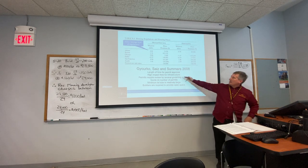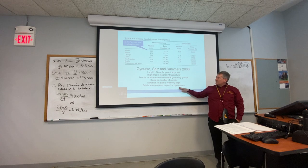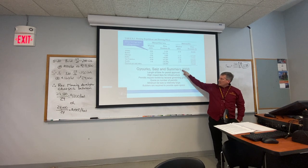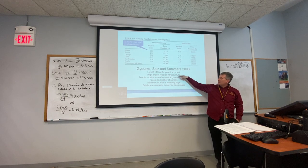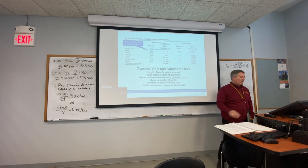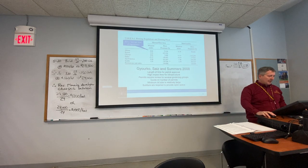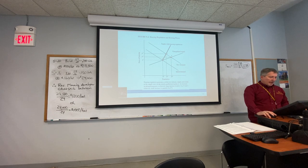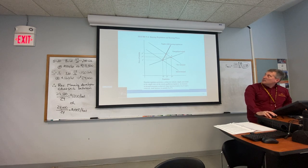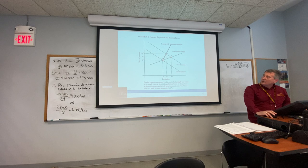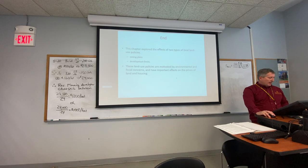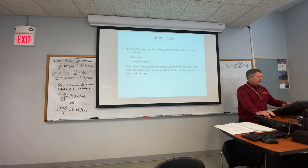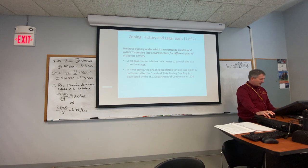Here are some of the things governments have done regarding size: minimum lot sizes, requiring open space, and other regulations. All of those are things that have been done. Housing regulations tilt the supply curve up, whereas the regular supply curve would leave prices lower.